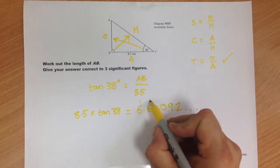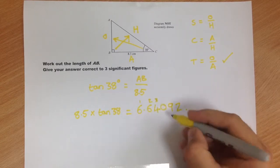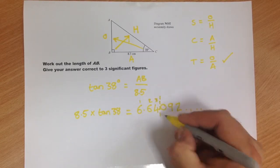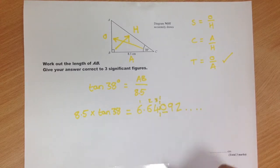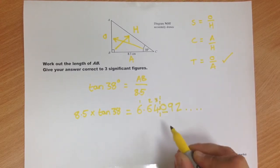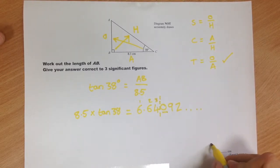The 6 is our first significant figure, there's the second, there's the third. So the cutoff's going to be there. Check that number to see if it's 5 or more. It's not. So our final answer is 6.64 centimeters.